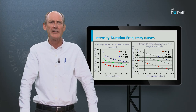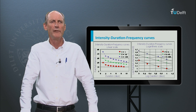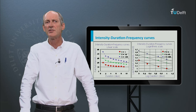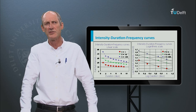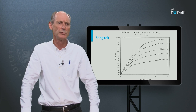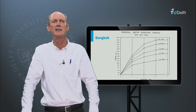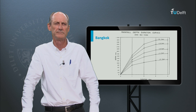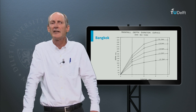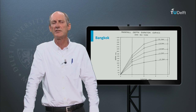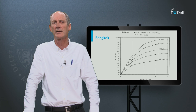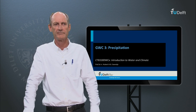Such graphs are extremely useful to design the drainage of parking lots, pumping capacities of polders, or design discharges for culverts and bridges. Here is a graph for Bangkok, which was used to design the drainage of the city on the right bank of the Chow Pier. Now that we have looked into the characteristics of evaporation and precipitation, it is time that we start to look at the third component of the water balance, the runoff. See you later.